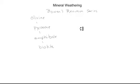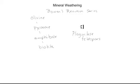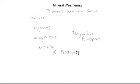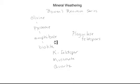On the right-hand side of Bowen's reaction series there are plagioclase feldspars. At higher temperatures you get calcium-rich plagioclase, and compositions evolve toward more sodium-rich as crystallization proceeds. Then there's potassium feldspar, muscovite, and finally quartz — the last mineral to crystallize out of a magma. We can use this list of silicate minerals to talk about how the different minerals will weather.